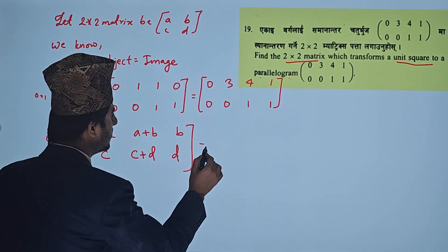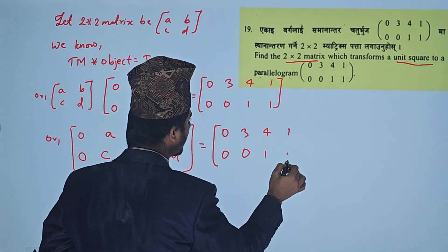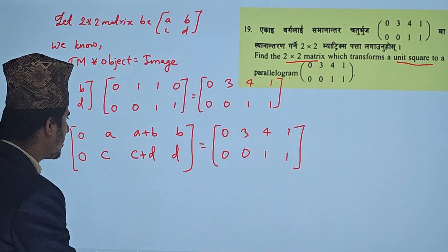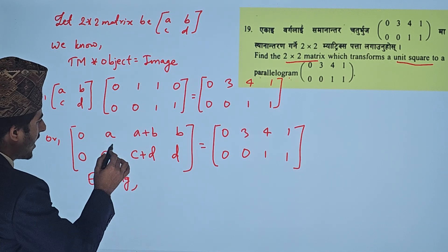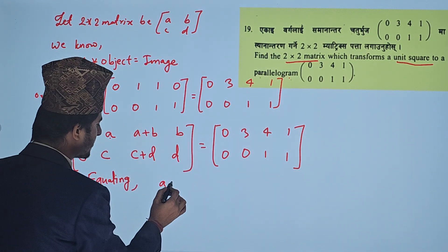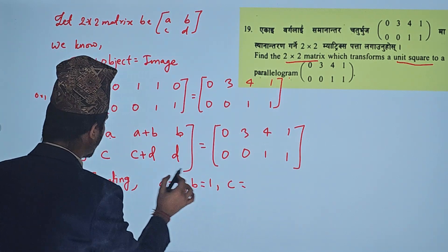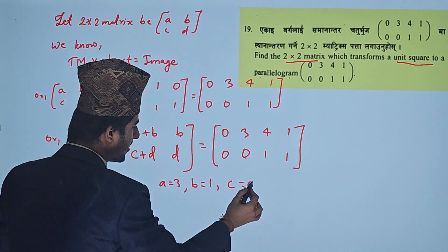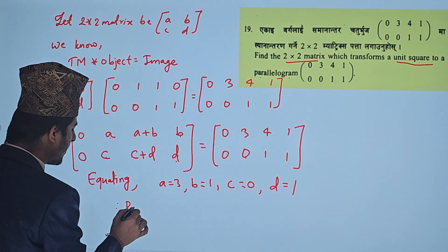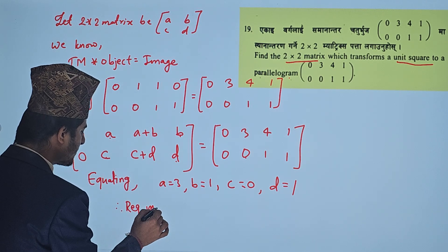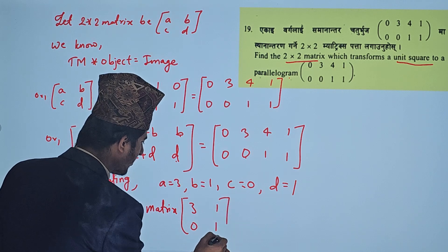The result is equal to 0, 0, 3, 0, 4, 1, 1, 1. Equating terms: B = 3, C = 0, D = 1. The general transformation matrix A, B, C, D gives the answer: 3, 1, 0, 1.